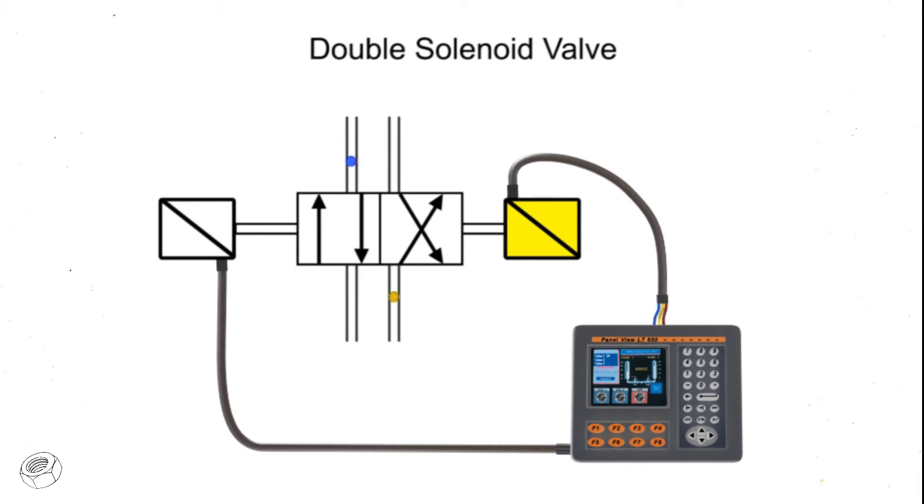Energizing the second solenoid will send the valve to the second position. Even if the second solenoid is de-energized, the valve will remain shifted until the first solenoid is re-energized. Since there is nothing holding the valve in the shifted position other than friction, these types of valves should be mounted horizontally to avoid self-shift due to excessive airflow or vibration. If both solenoids are energized at the same time, the solenoids will work against each other and may cause the spool to become stuck, electrical burnout of the solenoid, or an overload of inrush current to the circuit, any of which will cause severe damage to the system or valve.